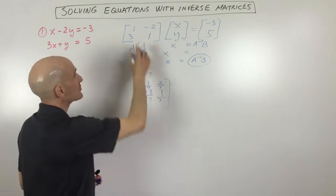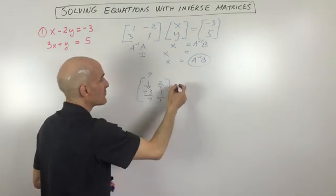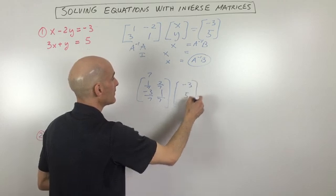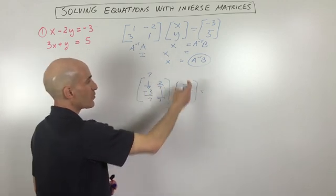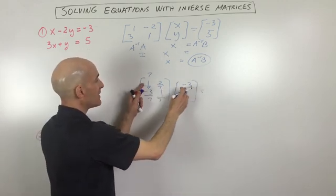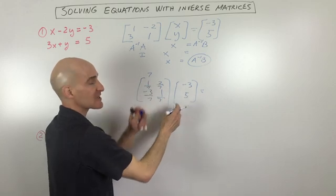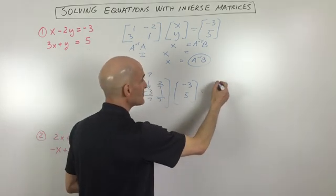So this is our inverse matrix of A times our matrix B, negative 3, 5. And what we get, you can see, is first row, first column. That's going to be negative 3 sevenths plus 10 sevenths, which is 7 sevenths, or 1.